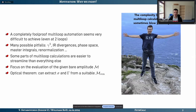Why is it so difficult to make fully automatic? Doing it foolproof — so the person can just enter the process and hit enter — requires dealing with many potential pitfalls: the issue of gamma-5 extended to D dimensions, infrared divergences, phase space integration, dealing with master integrals, renormalization for UV divergences, and so on. However, some parts of multi-loop calculations are actually easier to streamline than everything else.